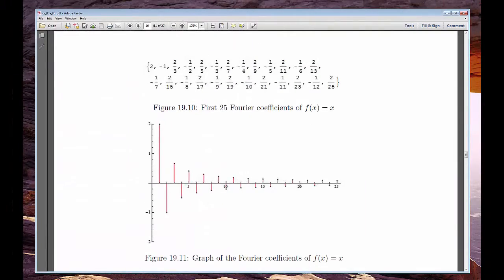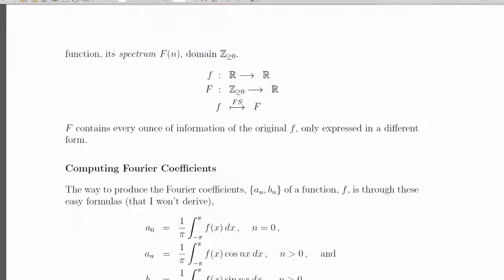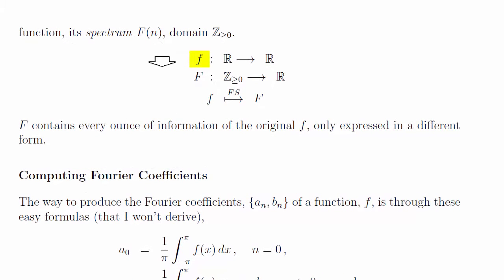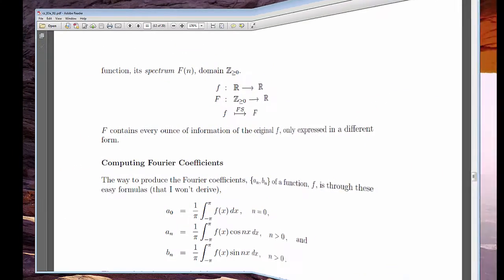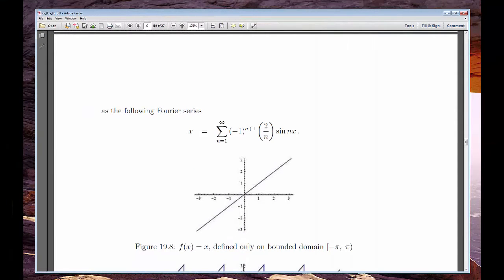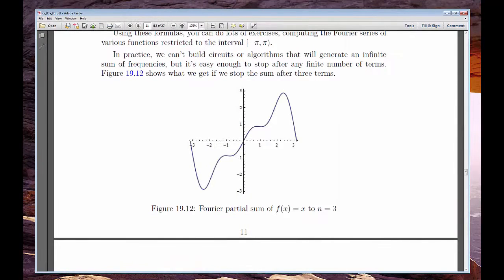Here's part of a graph of the first 25 coefficients for the function f of x equals x. All these a sub n's and b sub n's taken together make up the so-called spectrum of the function. If we have the function, we can find the spectrum. If we have the spectrum, we can build the function. Each half gives a different view of the same entity. The sum may be infinite, but we can stop at any point and get a finite approximation to f. You can see how the further we take the sum, the better approximation we get to our desired function.